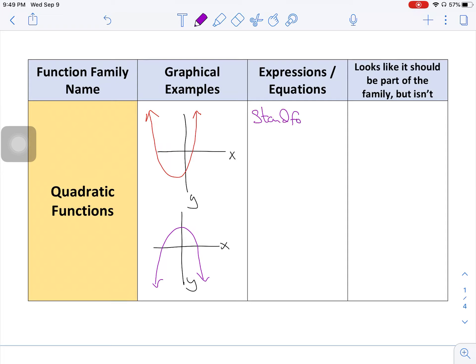You need to have something that's in standard form. Standard form is y is equal to ax squared plus bx plus c. And in this format, a cannot equal zero. If a were to equal zero, then zero times x squared would completely eliminate that term. And all you'd have left is bx plus c, which is a linear function. So you need to make sure that a is not equal to zero.